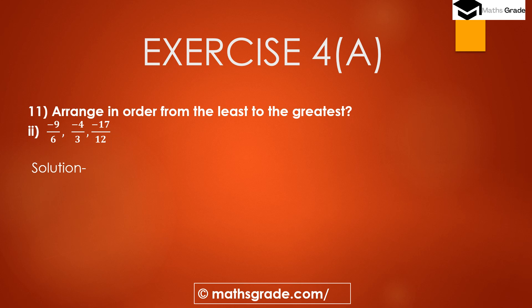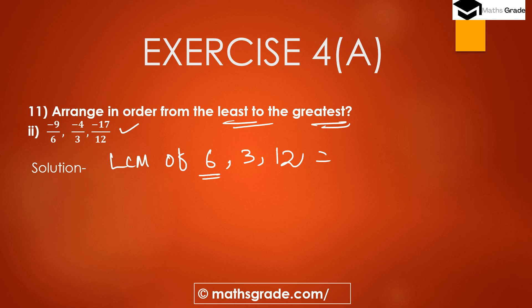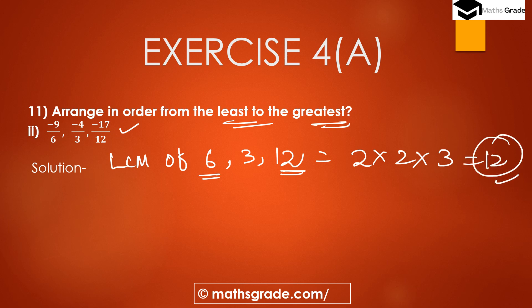Question number 1, second bit: arrange −9/6, −4/3, and −17/12 from the least to the greatest. First find the LCM of denominators 6, 3, and 12. Prime factorization of 6 is 2 × 3, and prime factorization of 12 is 2 × 2 × 3. So LCM of 6, 3, and 12 is 12.